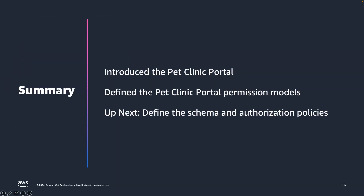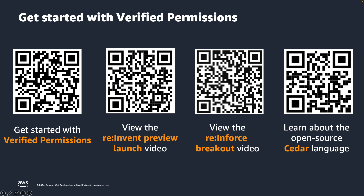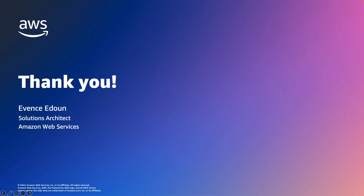In this video, we introduced the vet application. We defined the actions that each principal is allowed to perform on our resources. In the next videos, we will learn how to define the schema and how to write policies. To learn more about Amazon Verified Permissions and schema, please scan the QR code on the screen. Thank you.